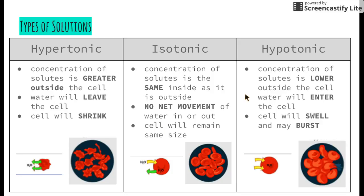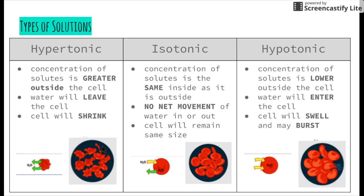All solutions can be divided into three different types: hypertonic, isotonic, and hypotonic. A hypertonic solution is one whose concentration of solutes, such as salt, is greater outside the cell. As a result, there is a greater concentration of water inside the cell, so water will leave the cell and the cell will end up shrinking. This has a major impact on plant cells in particular — if they lose a lot of water, the cell becomes what we know as flaccid, which causes the limp, wilting effect we see in plants.